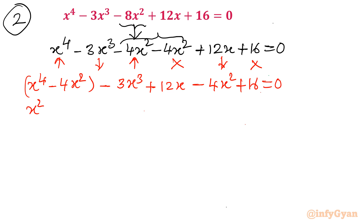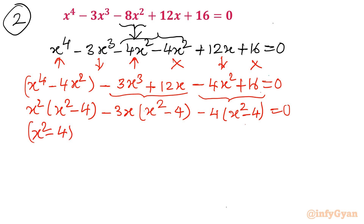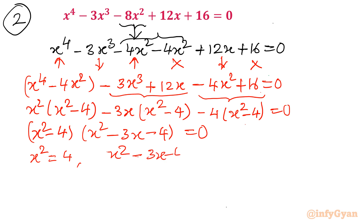Taking x squared common from the first bracket gives x squared times (x squared minus 4). Taking minus 3x common from the second bracket gives minus 3x times (x squared minus 4). Taking minus 4 common from the third bracket gives minus 4 times (x squared minus 4). Now x squared minus 4 is a common factor throughout, so factoring it out leaves (x squared minus 4)(x squared minus 3x minus 4) equals 0.